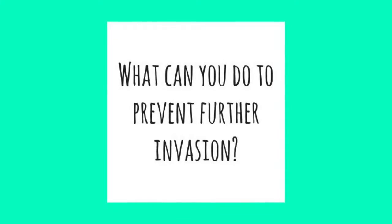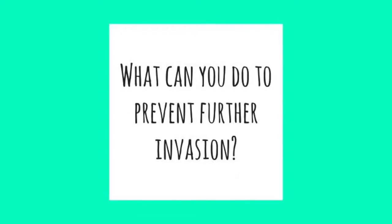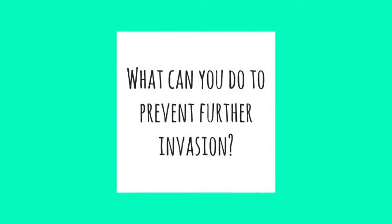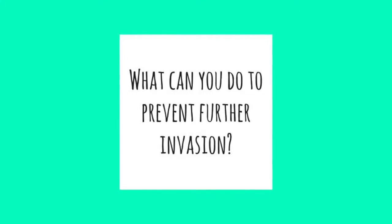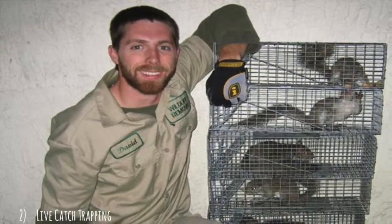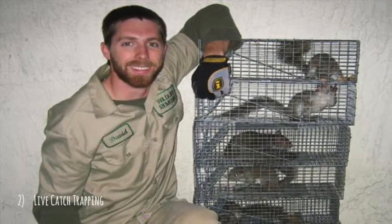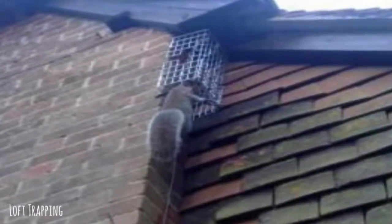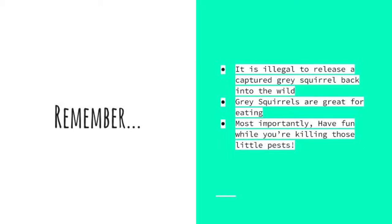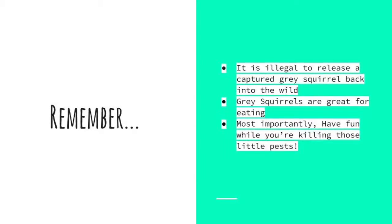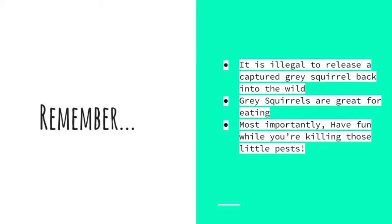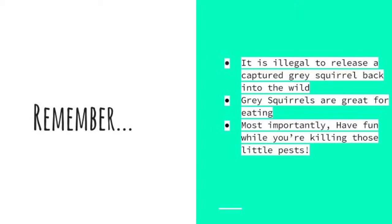What can you do to prevent further invasion? There are four great things you can do to decrease the squirrel population in Great Britain: 1. Squirrel trapping. 2. Live cage trapping. 3. Loft trapping. 4. Simply go out and hunt them. Although you must remember, it is illegal to release a captured gray squirrel back into the wild. Gray squirrels are great for eating. Most importantly, have fun while you're dealing with those little pests.